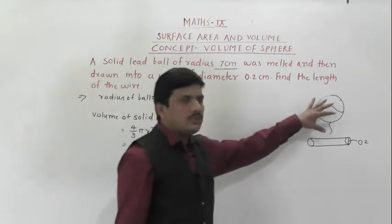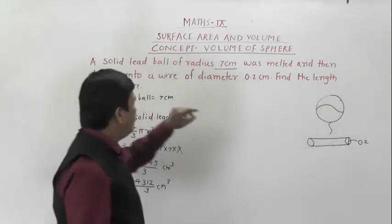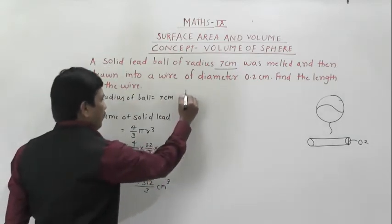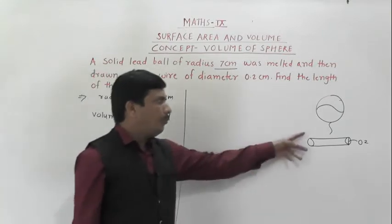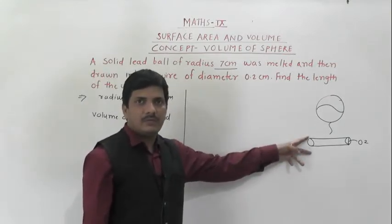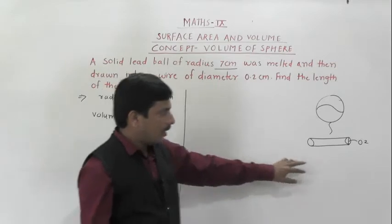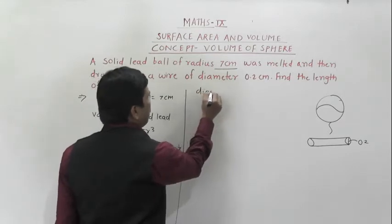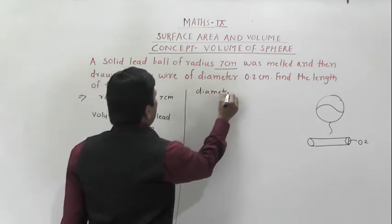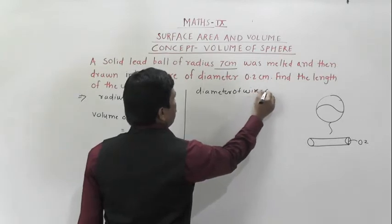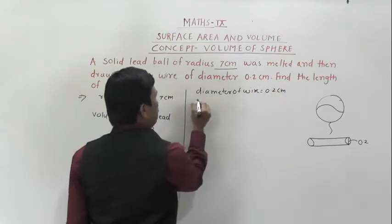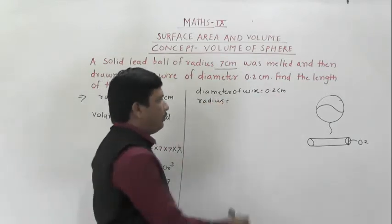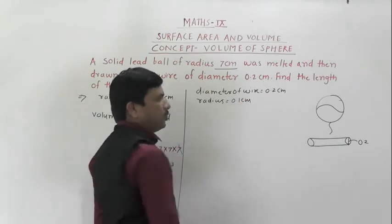So 4312/3 centimeter cube is the volume of the solid sphere — that is the solid lead ball of radius 7 centimeters. Now we will find out the volume of the cylindrical wire. For that we must know its radius. Diameter of wire is 0.2 centimeters, so radius equals 0.2 divided by 2, which is 0.1 centimeters.